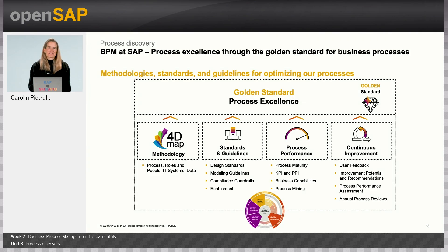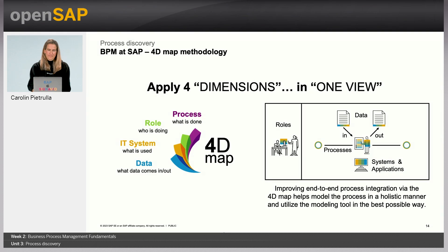It's time to go backstage at SAP and look at what SAP has defined for process discovery. At SAP, we have defined a BPM governance framework called the Golden Standard of Process Excellence. It summarizes the holistic 4D process modeling approach, a set of standards and guidelines, and the concept of process performance and continuous improvement. As most elements of the Golden Standard are somewhat self-explanatory, I would like to spend a little more time on the 4D modeling methodology.